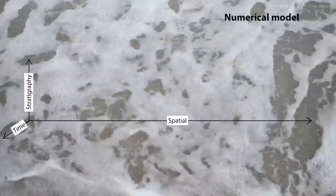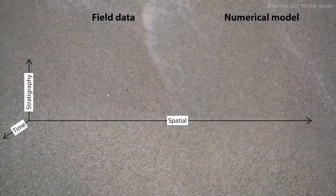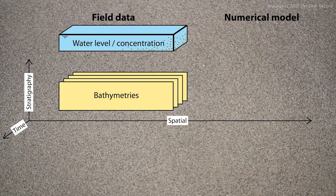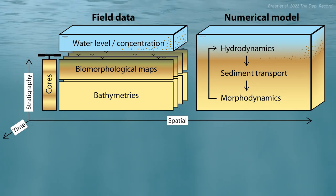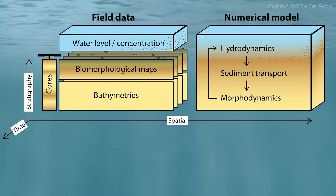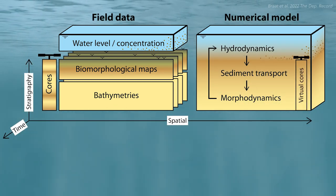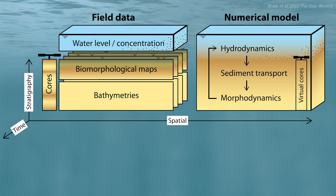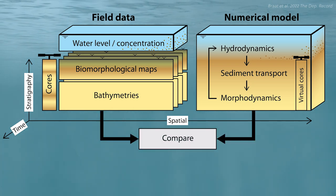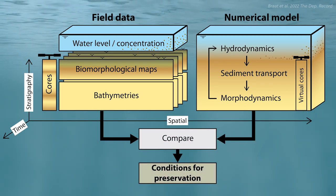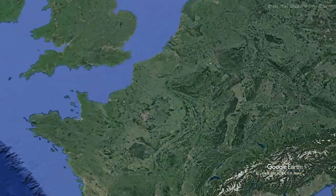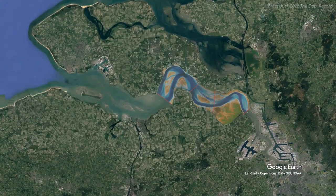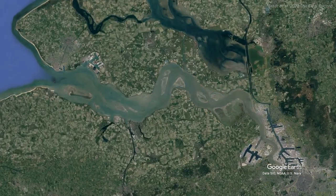We combine numerical modelling results with field data. The field data provides a detailed spatial and vertical distribution of mud, while the model provides insight into the processes of mud deposition and erosion over time. Our study was conducted on the shoal of Walsorden in the Western Skelp.